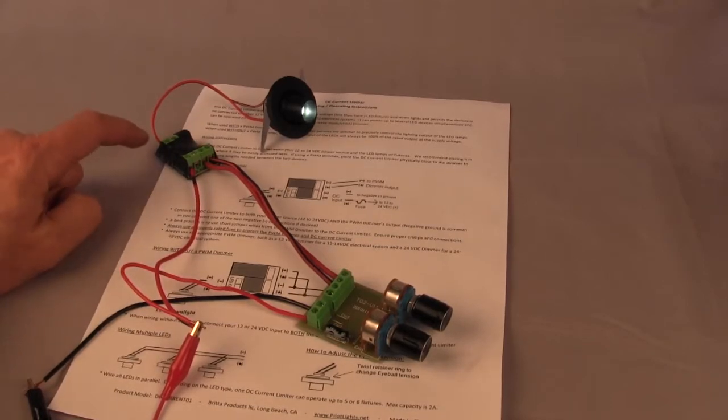The output side is always on this side of the current limiter, where there's only two connections. And you'll see that they're marked positive and negative for your lamp.